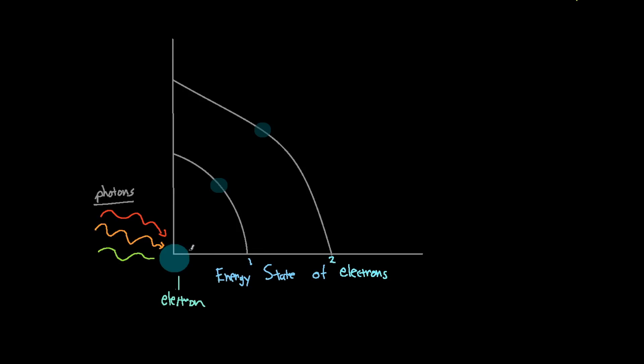And when this happens, our electron becomes excited. And what does this mean? Well, this means that our electron is bumped into a higher energy state. So here we can see the energy state of electrons. And if you can see here, this is a certain amount of energy. And this is more energy. And it keeps going on and on.